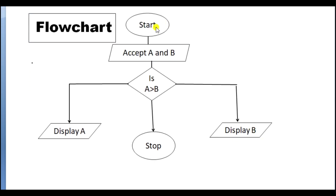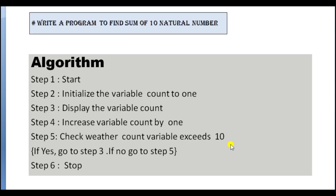Now in the flowchart, we have to start the program, then we have to accept A and B. If A is greater than B, then we have to display A; otherwise we have to display B as the greatest number. And now we have to stop the program.